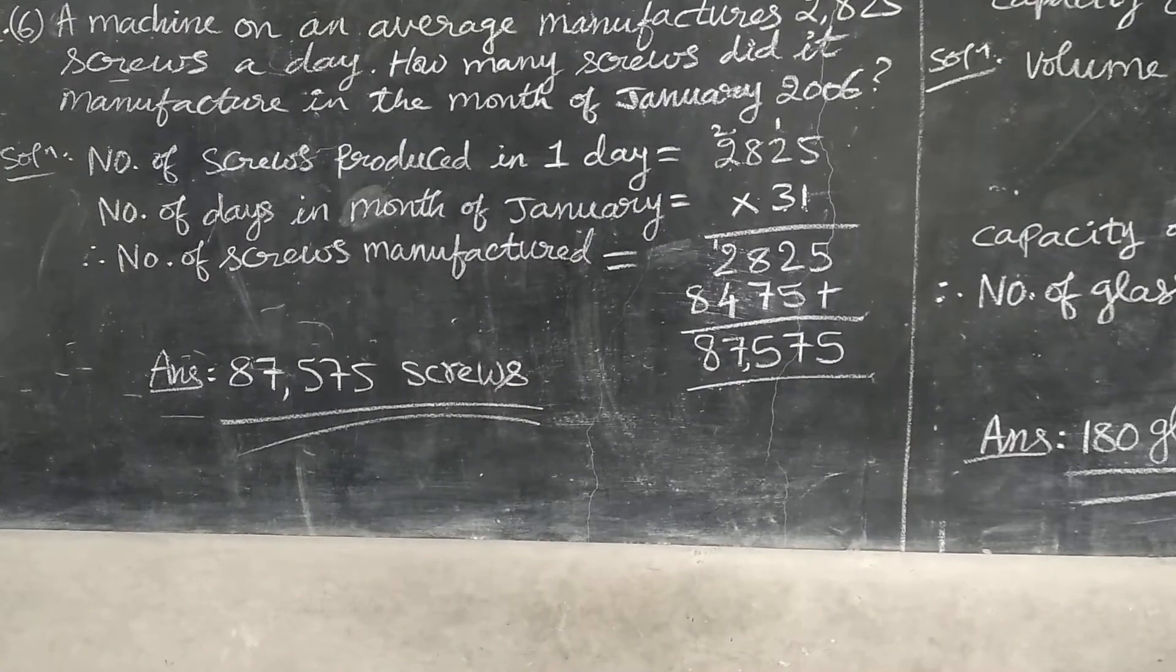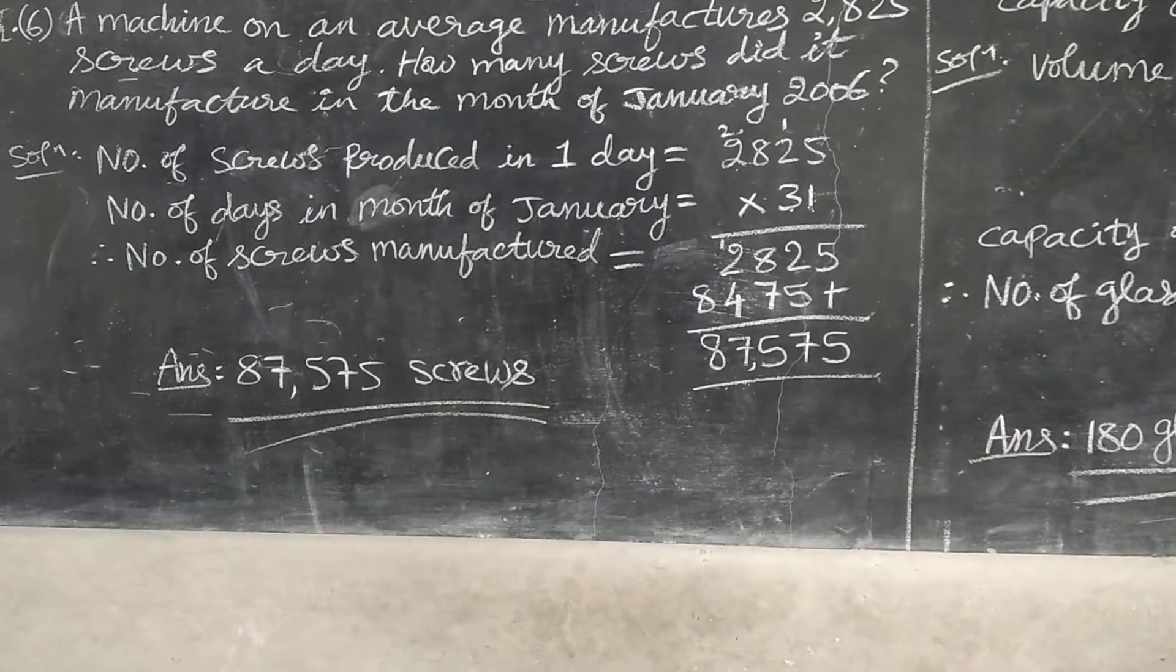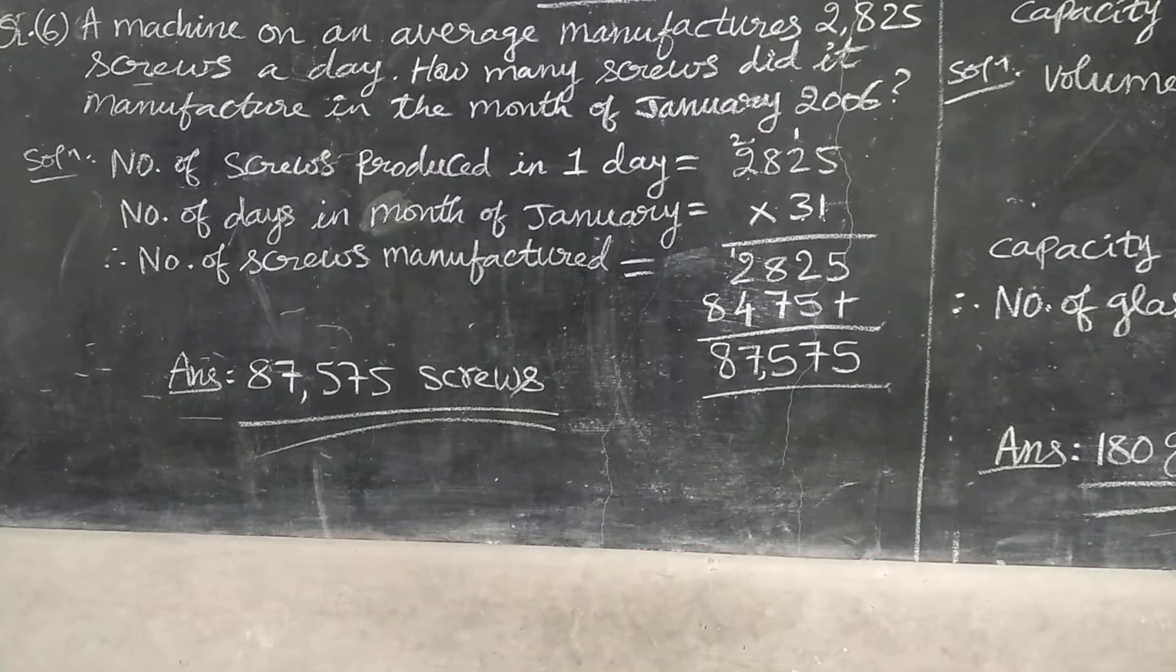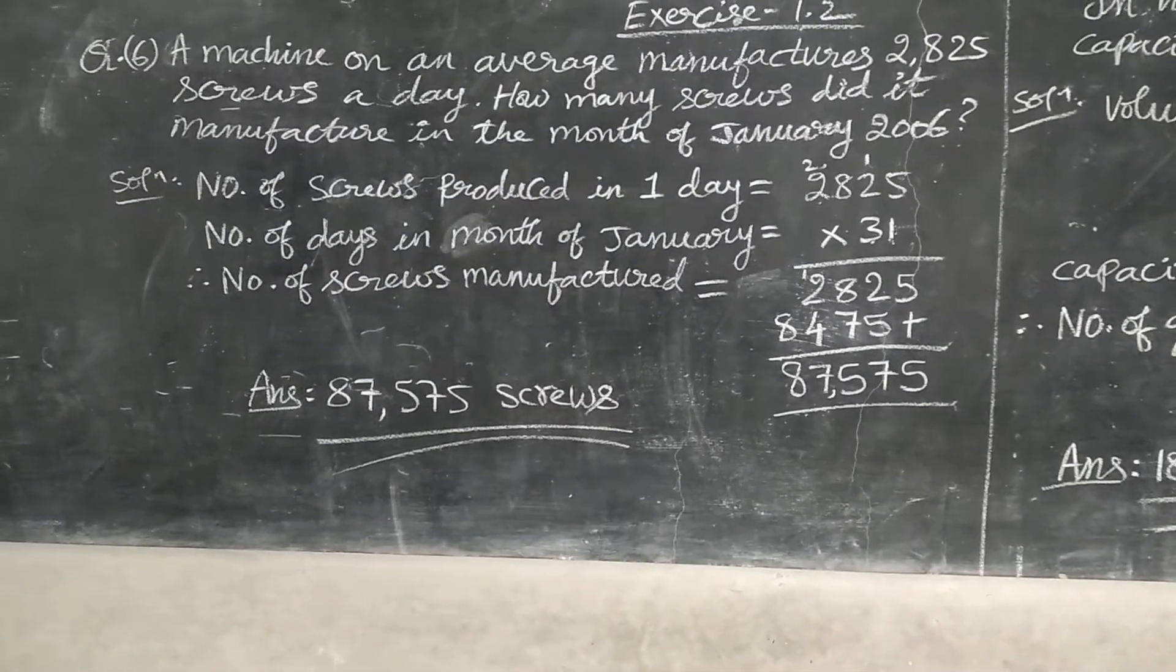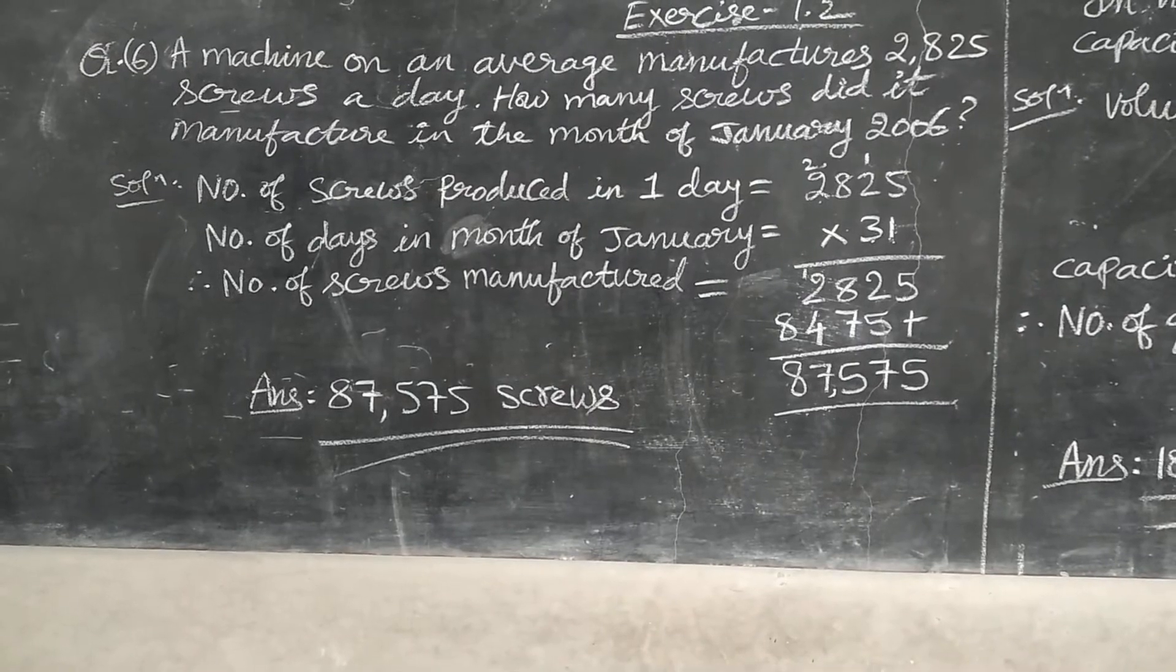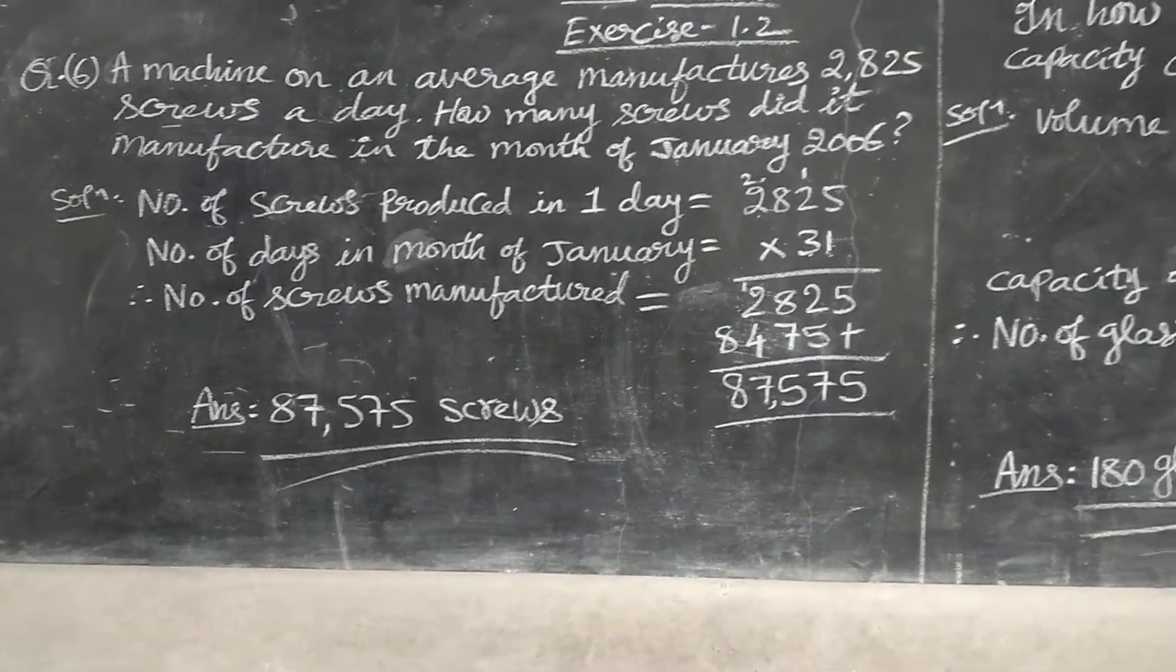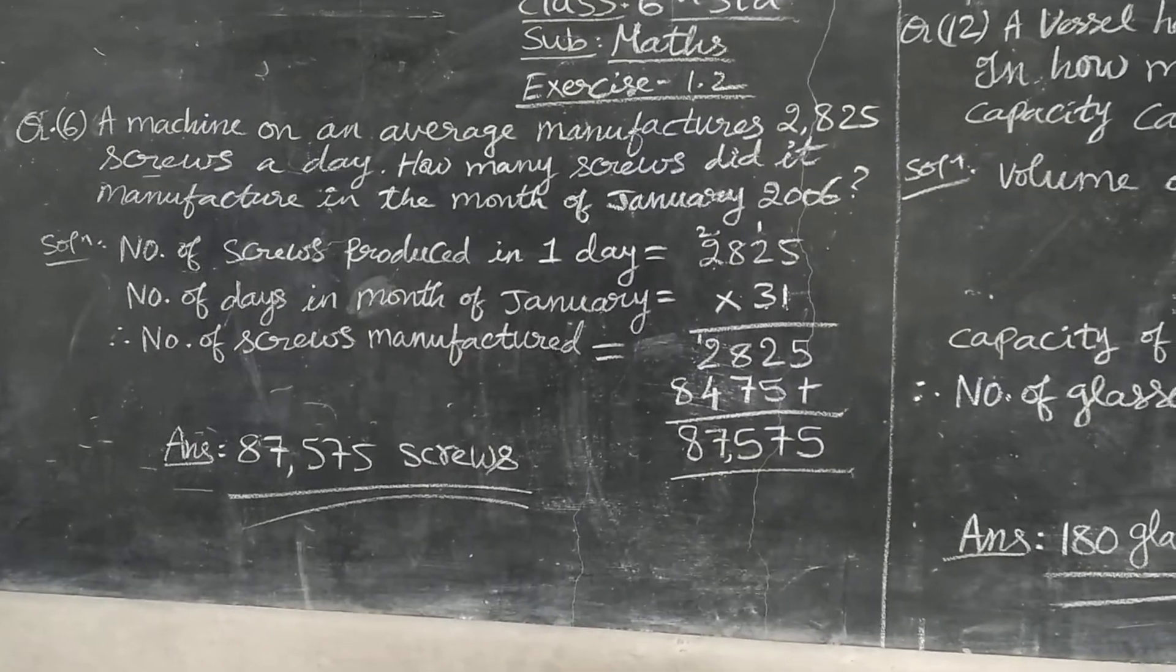It means 87,575 screws are manufactured in the month of January. That you have to write in the last answer is equal to 87,575 screws. So this is about multiplication.